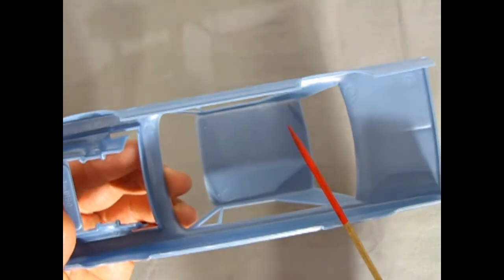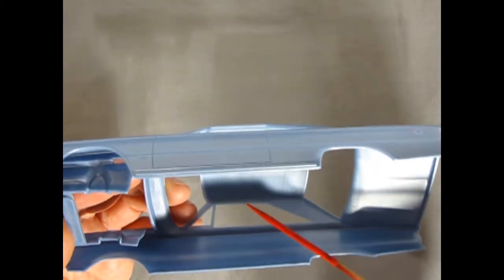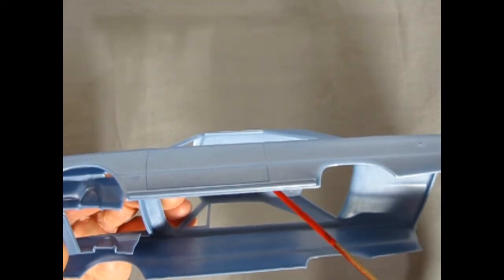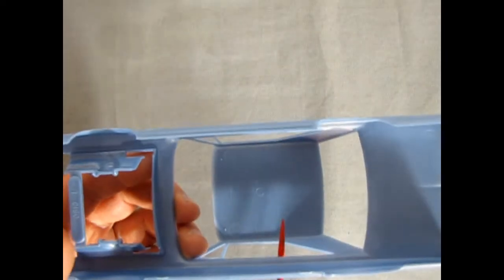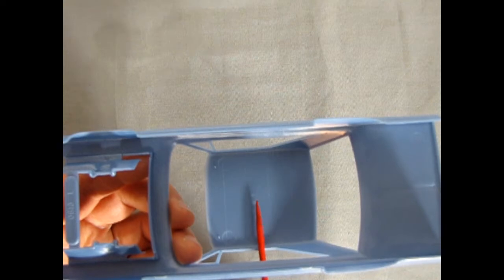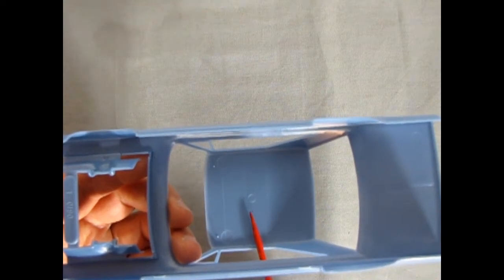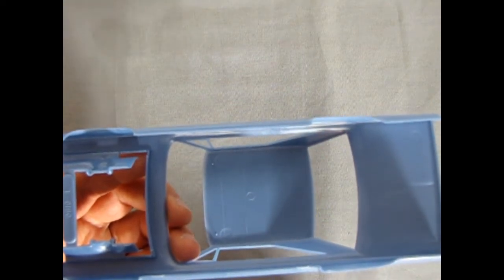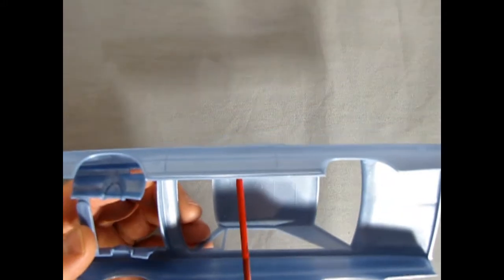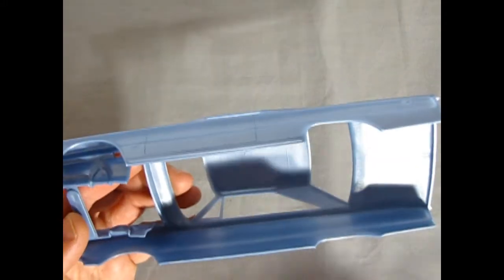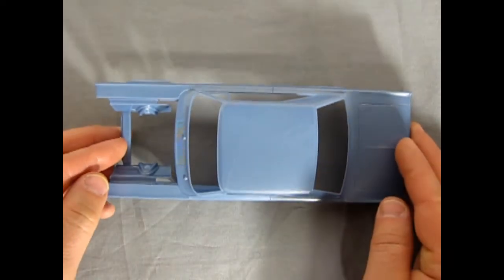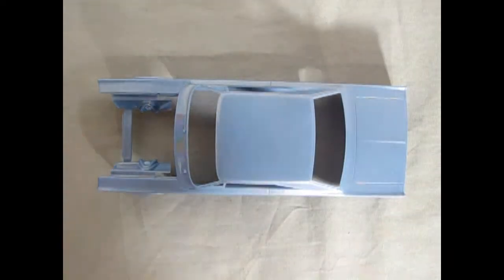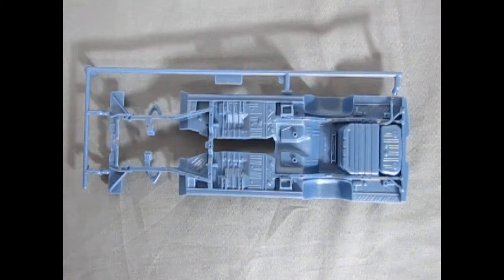But remember this one in the center here, this one right here in the center, don't remove that because that's your indication of where that dome light goes in. So keep that in mind when you're getting these ones down with your number 16 hobby blade. So anyway again very nice detailed crisp body in that nice metallic blue.